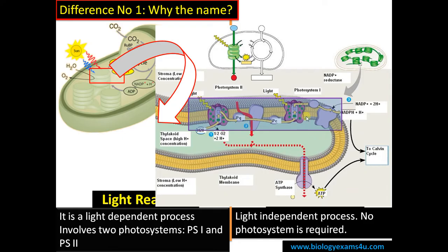The other thing happening is the synthesis of NADPH. So in light reaction, it is totally dependent on sunlight, where the energy from sunlight is converted to chemical energy in the form of ATP and the reducing power NADPH.